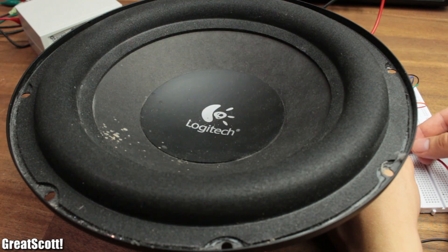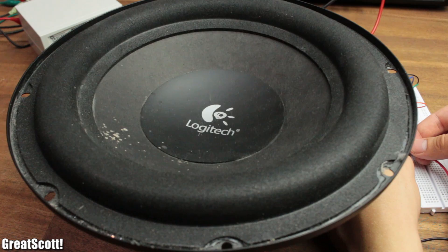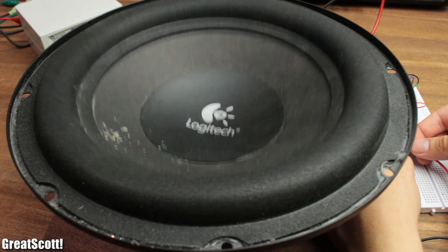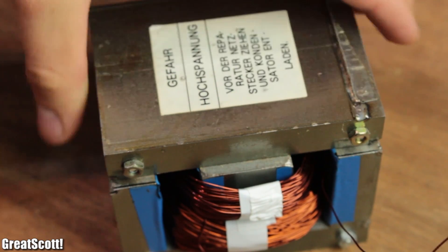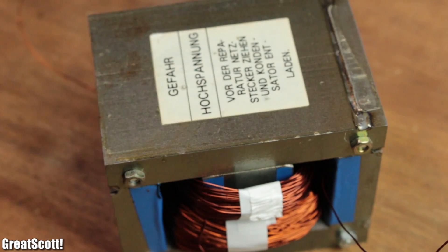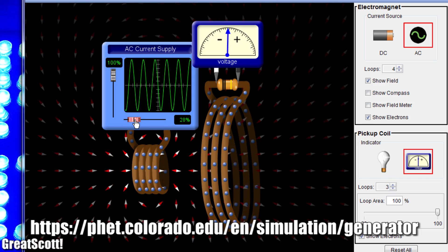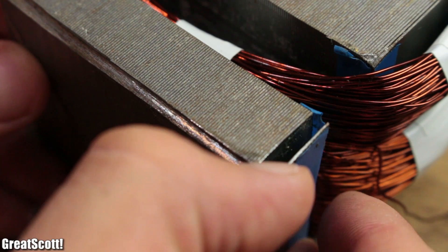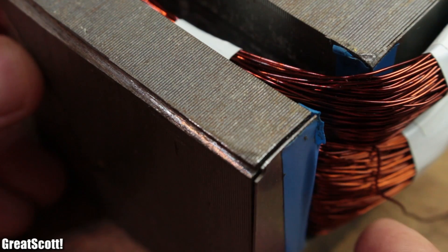This moves the cone in the frequency of the input signal and creates the hearable sound. And our transformer is kind of the same. The coils also create a changing magnetic field.